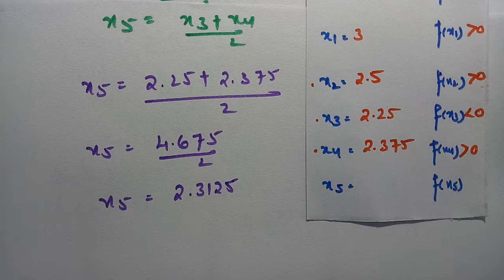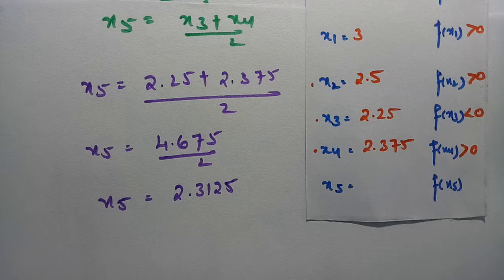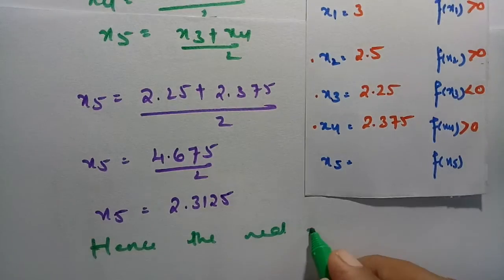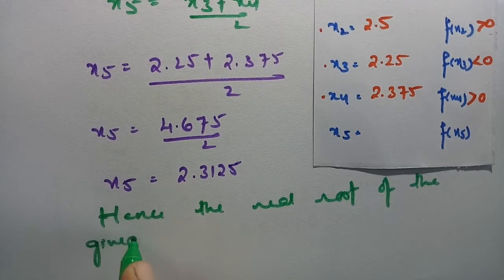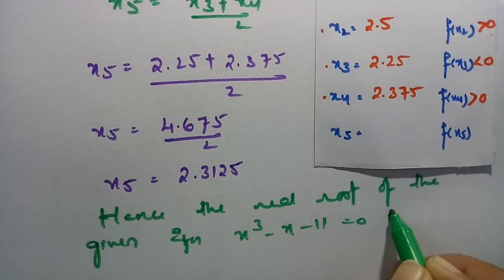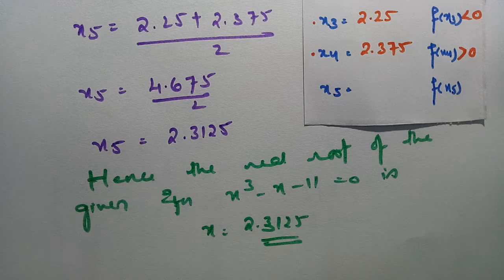The root lies between 2 and 3. After 5 iterations we stop, and this is the answer. Hence the real root of the given equation x cubed minus x minus 11 equals 0 is approximately x = 2.3125. If the roots are similar across iterations, we can stop and conclude 2.3125 is the solution.